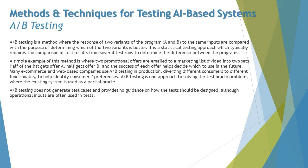A/B testing might look like alpha and beta testing, but it exactly is not. A/B testing is a method where the responses of two variants of a program — A and B — to the same inputs are compared, with the purpose of determining which of the two variants is better. It is a statistically-based testing approach which typically requires the comparison of test results from several test runs to determine the difference between the programs.